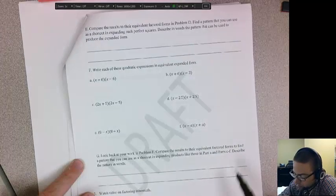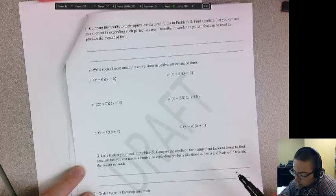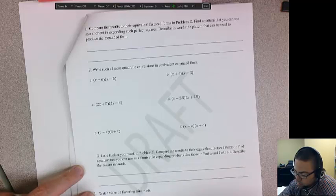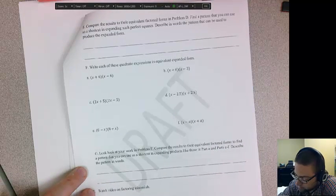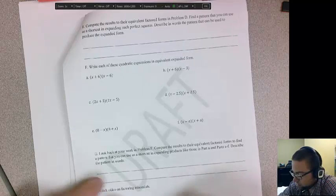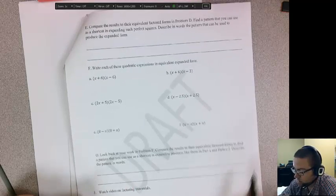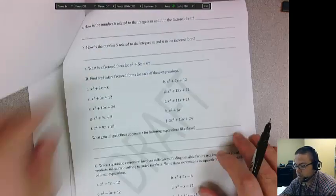Then you're going to watch the video on factoring trinomials. And factoring trinomials kind of goes backwards. You start with something like this and you go back to something like that. So now we're going to undistribute or go backwards.